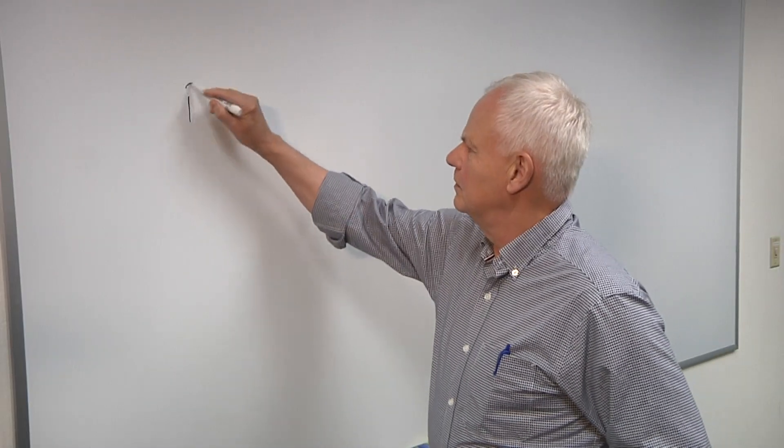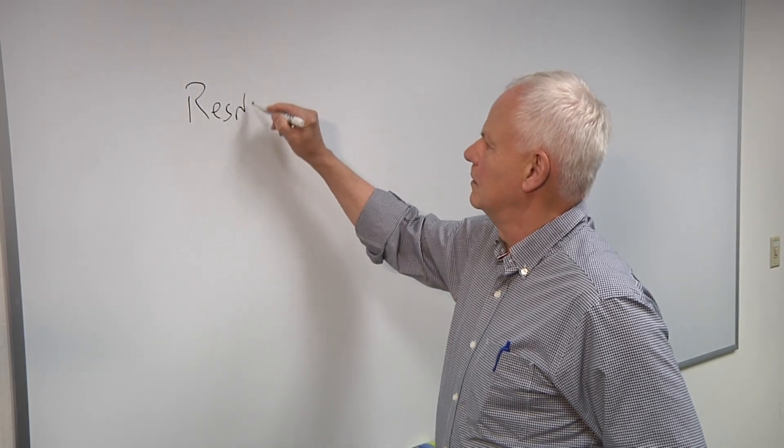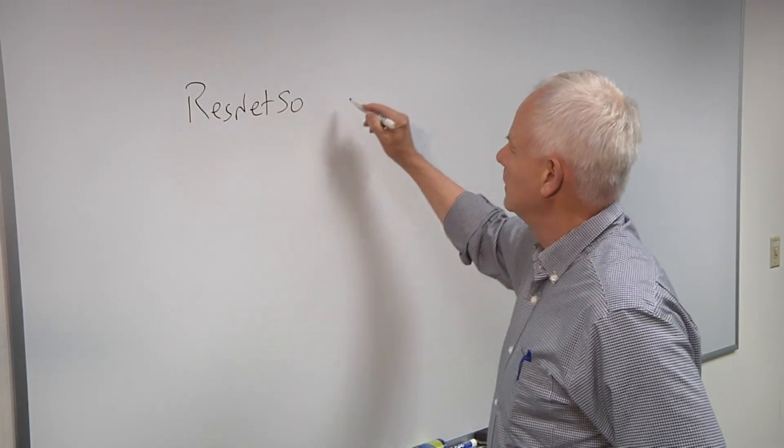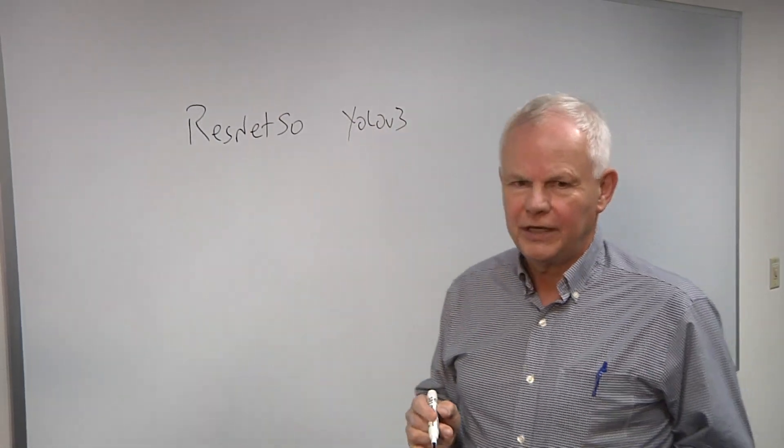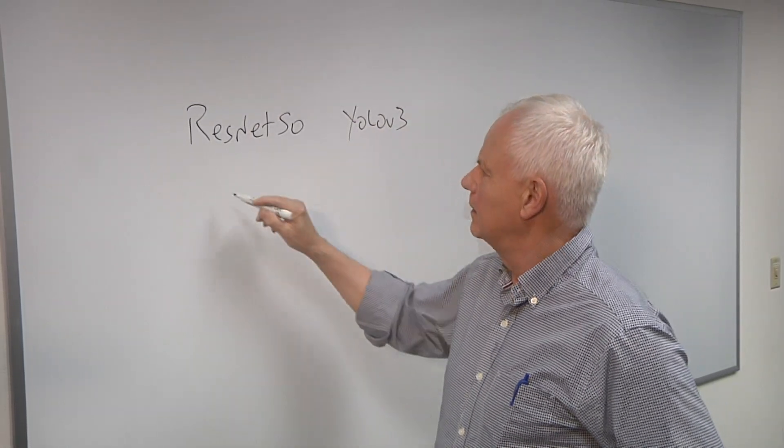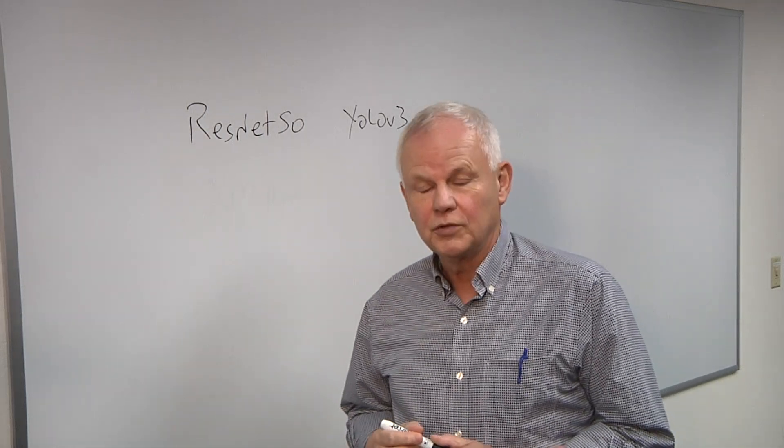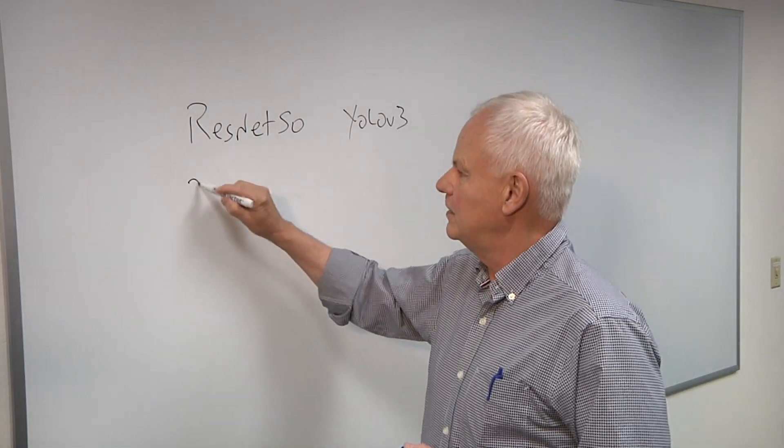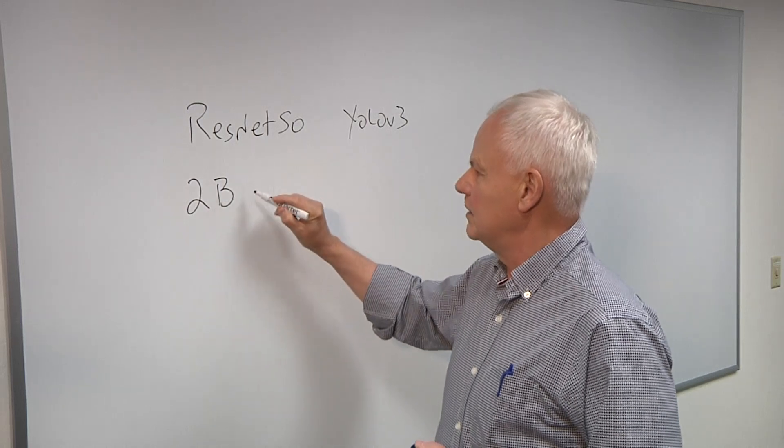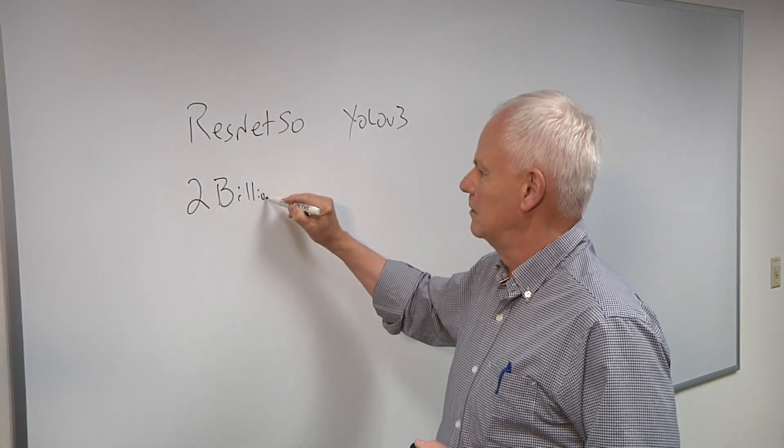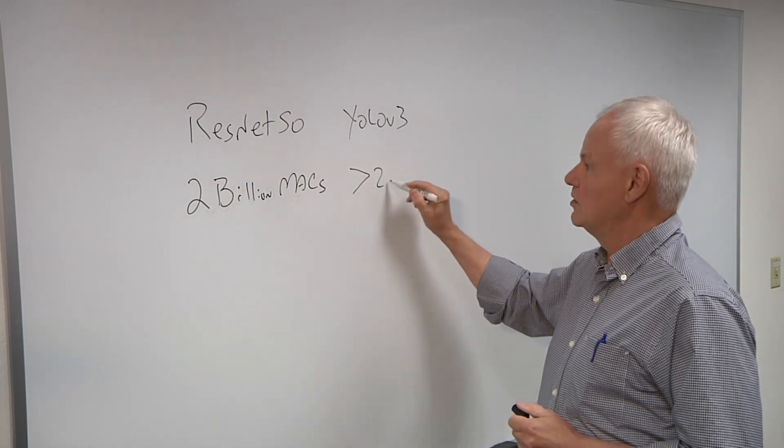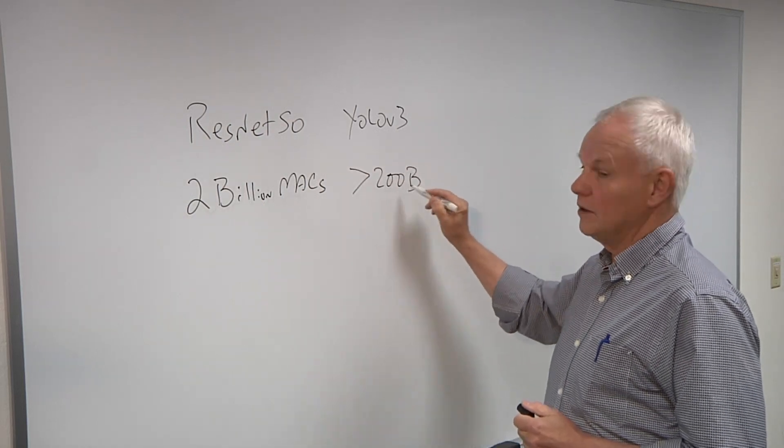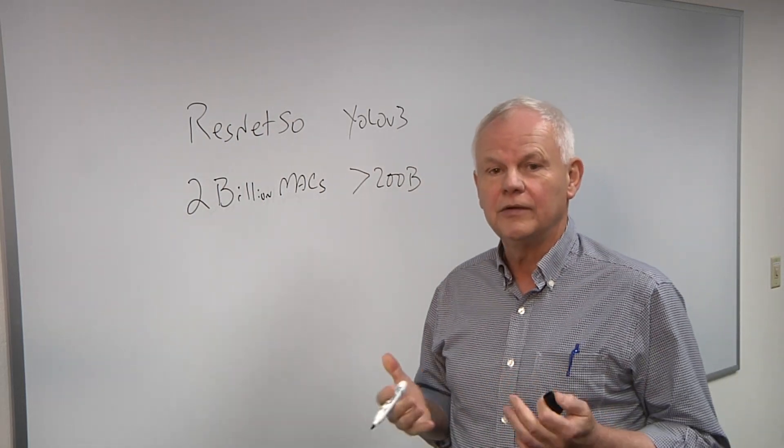So why don't you draw this out for us? Sure. Okay, so let's talk about the two benchmarks, ResNet-50 and YOLO-V3. First, on computational side. ResNet-50 is the most popular benchmark that people quote. For each image, it takes 2 billion multiply accumulates. But for YOLO-V3, it's over 200 billion multiply accumulates. So, 100 times increase.